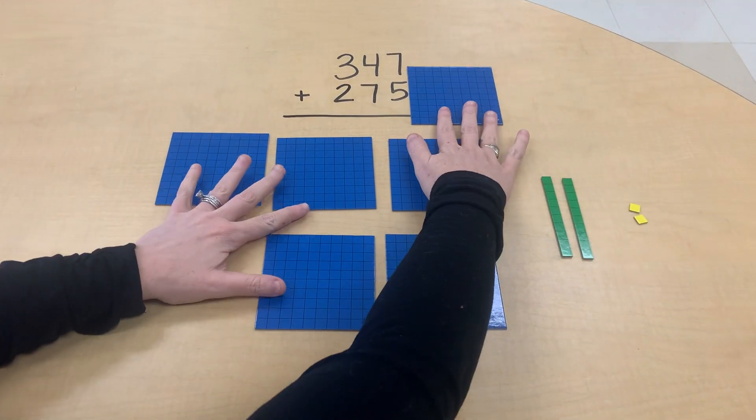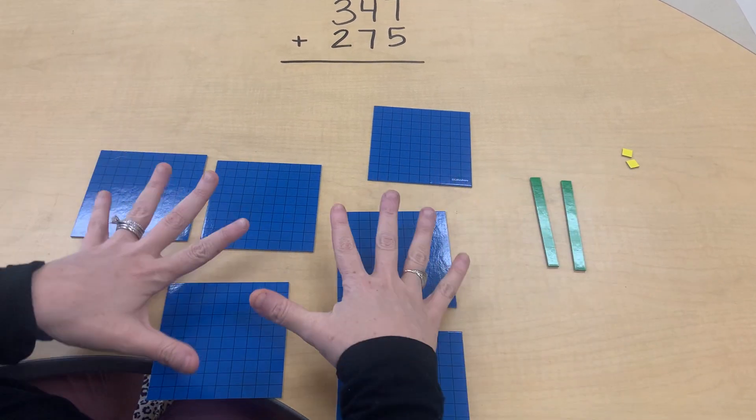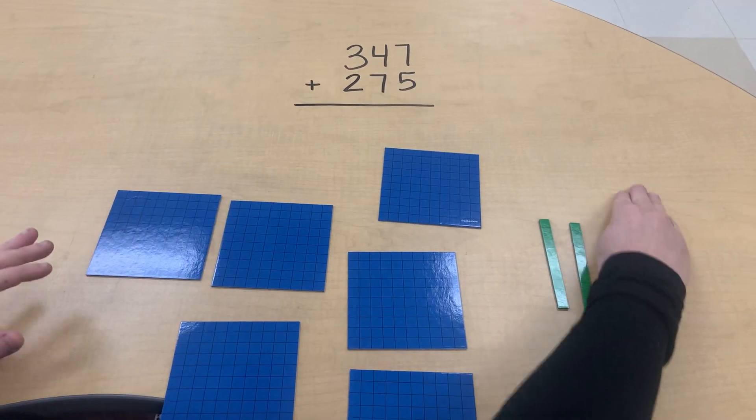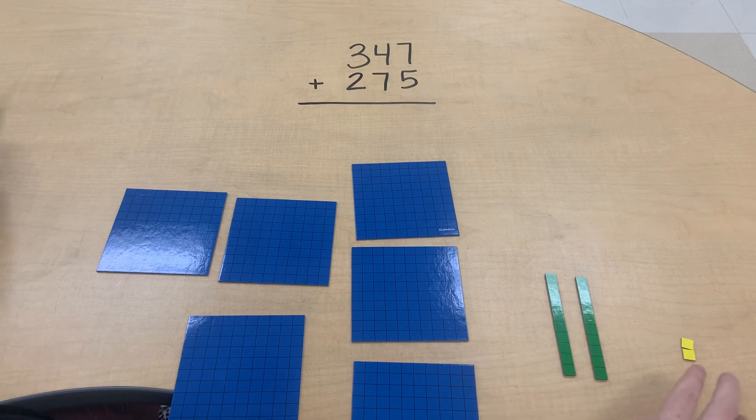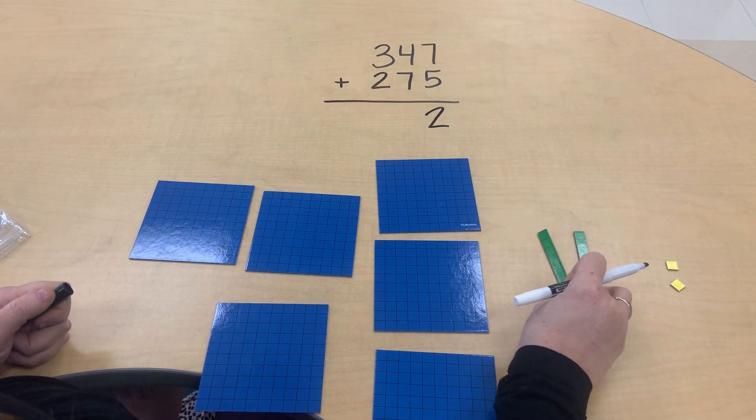So now we will write our answer. This is what we have left. There is nothing for us to regroup here or to move over. So we have two tens. I mean two ones, sorry.